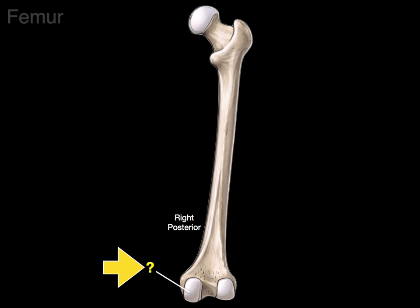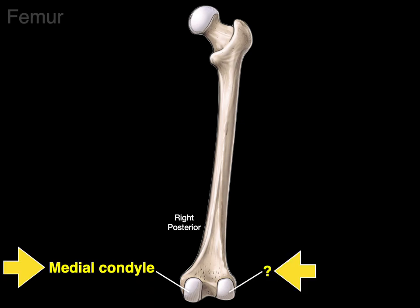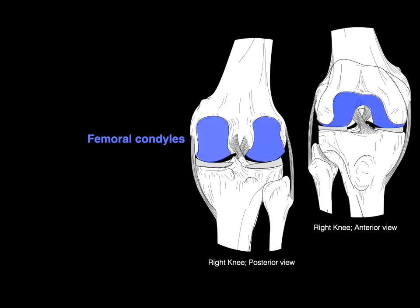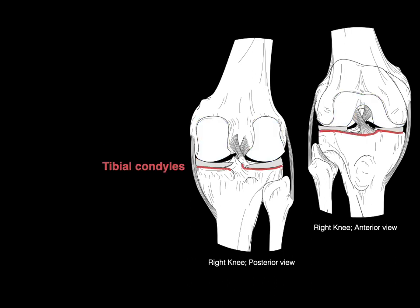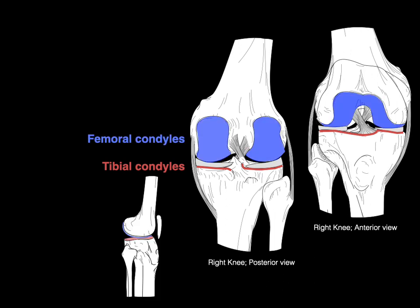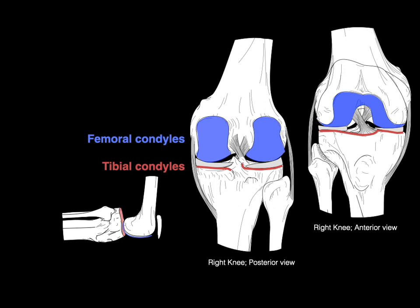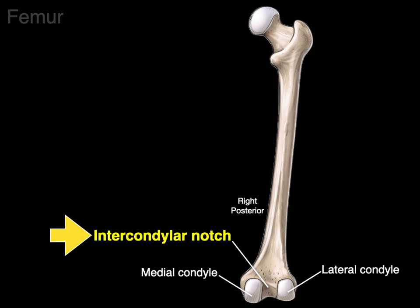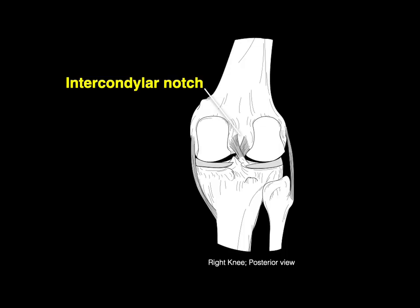There is a medial condyle and a lateral condyle — these two femoral condyles articulate with the condyles of the tibia. The femoral and tibial condyles make a hinge joint for flexion and extension of the knee joint. Between the two condyles we have a notch called the intercondylar notch, and on the femur that's where attachments of the ACL and PCL occur. They then attach to the intercondylar eminence on the tibia.